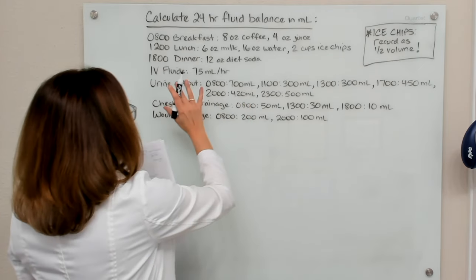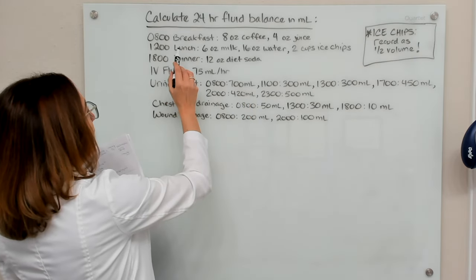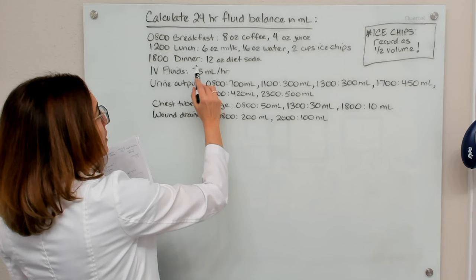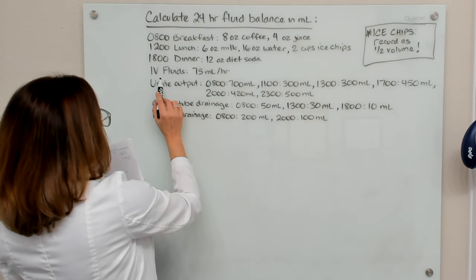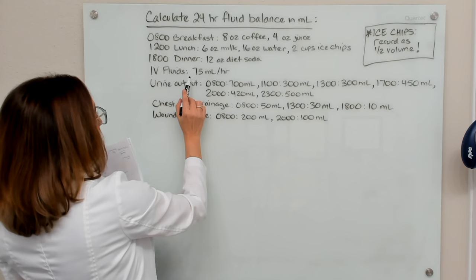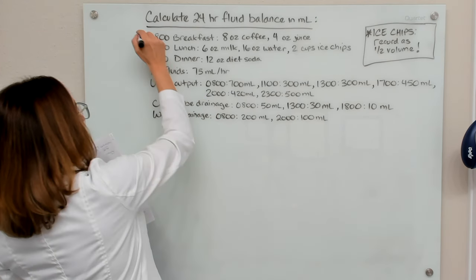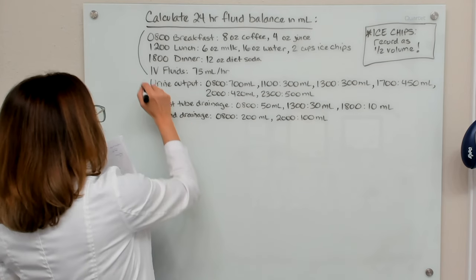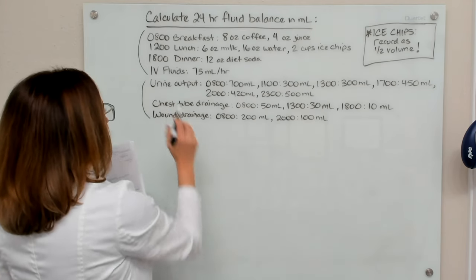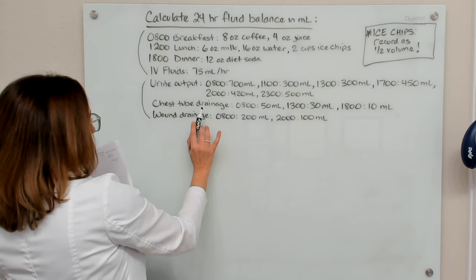Okay, so let's work through the example here. We have the fluid intake for this patient for breakfast, lunch, and dinner. And then they are also receiving IV fluids at a continuous rate. So this is all their intake. And then below here, we have all their output. So their urine output, their chest tube drainage, and their wound drainage.